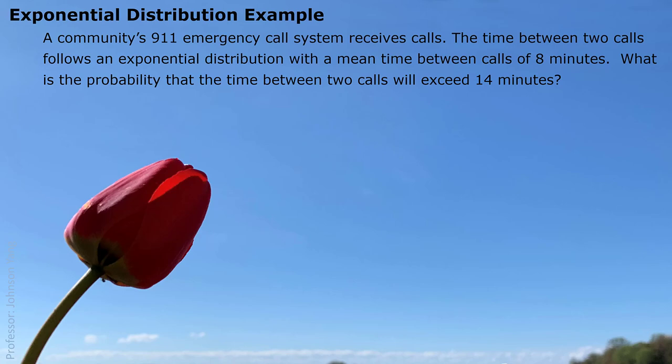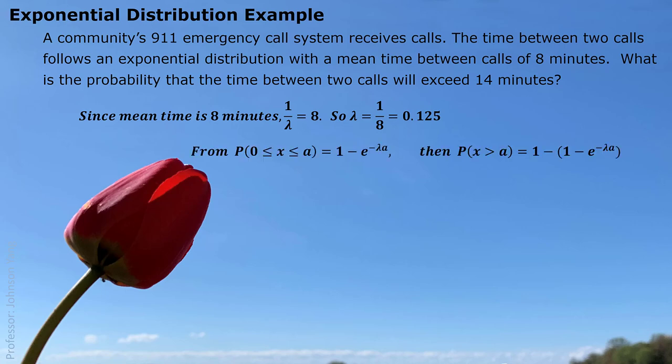Here is an example. A community's 911 emergency call system receives calls, and the time between two calls follows an exponential distribution with a mean time between calls of 8 minutes. That means on average, the time between one call and the next is 8 minutes. What is the probability that the time between two phone calls will exceed 14 minutes? We need to find λ. Since 1/λ is the average, 1/λ = 8, so λ = 1/8 = 0.125.